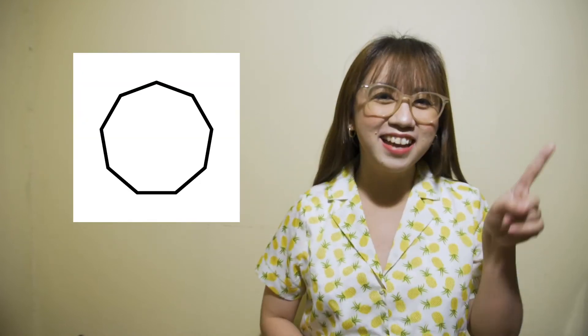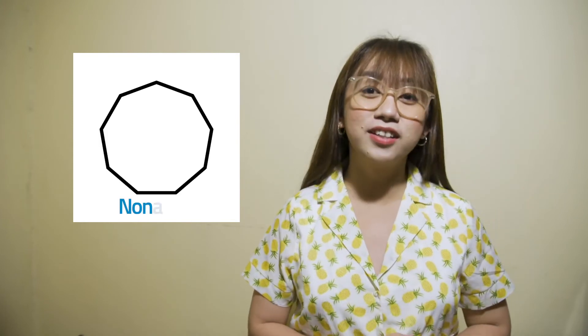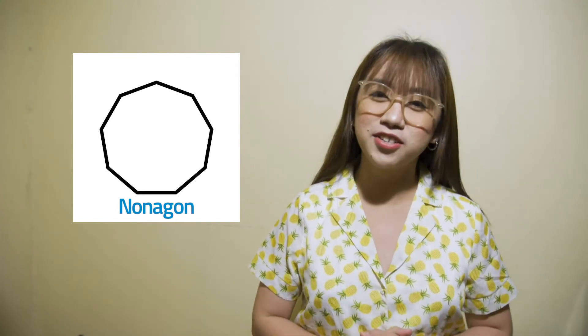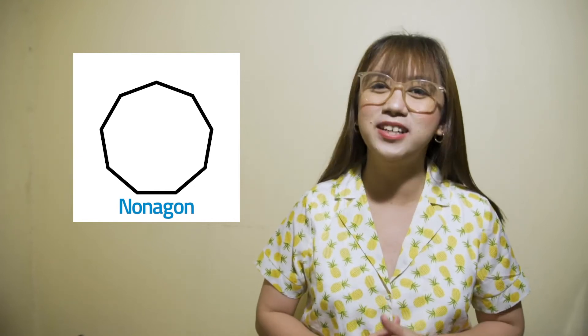How about this polygon? This is a nonagon because it has nine sides. The number of triangles formed in a nonagon is seven, and its total angle measurement is 1260 degrees.